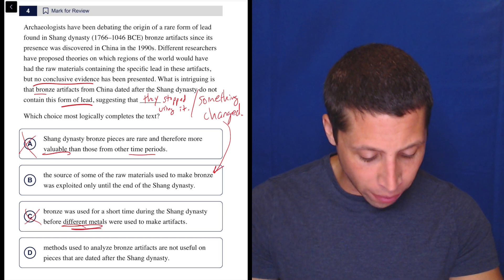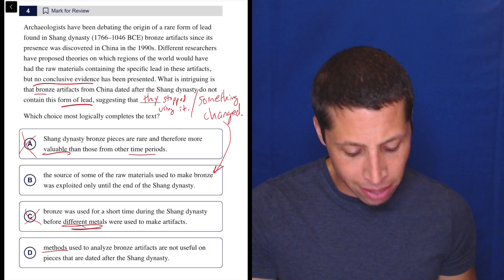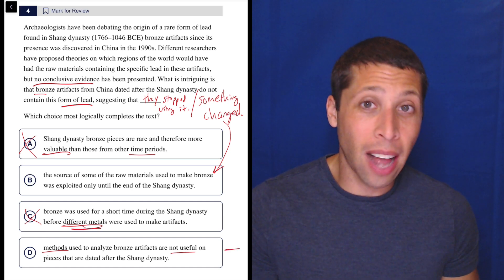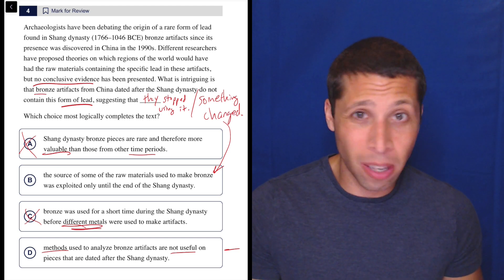D, methods used to analyze bronze artifacts are not useful on pieces that are dated after the Shang Dynasty. No, it's not about the methods. Just think of it. Like, this is a very negative choice, right? It's saying the science was bad. Is this a negative passage?